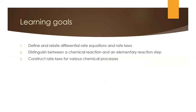The learning goals for today are to define different rate equations and relate them to come up with the integrated rate laws. We want to distinguish between balanced chemical reactions and the elementary reaction steps that build up a reaction mechanism. At the end, we'll figure out how to construct rate laws for various chemical processes and determine experimentally how these processes are linked to different chemical reactions.